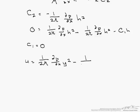1 over 2 mu dp/dx h squared. So that is our c2, and we can simplify this by saying u equals 1 over 2 times mu dp/dx times y squared minus h squared.